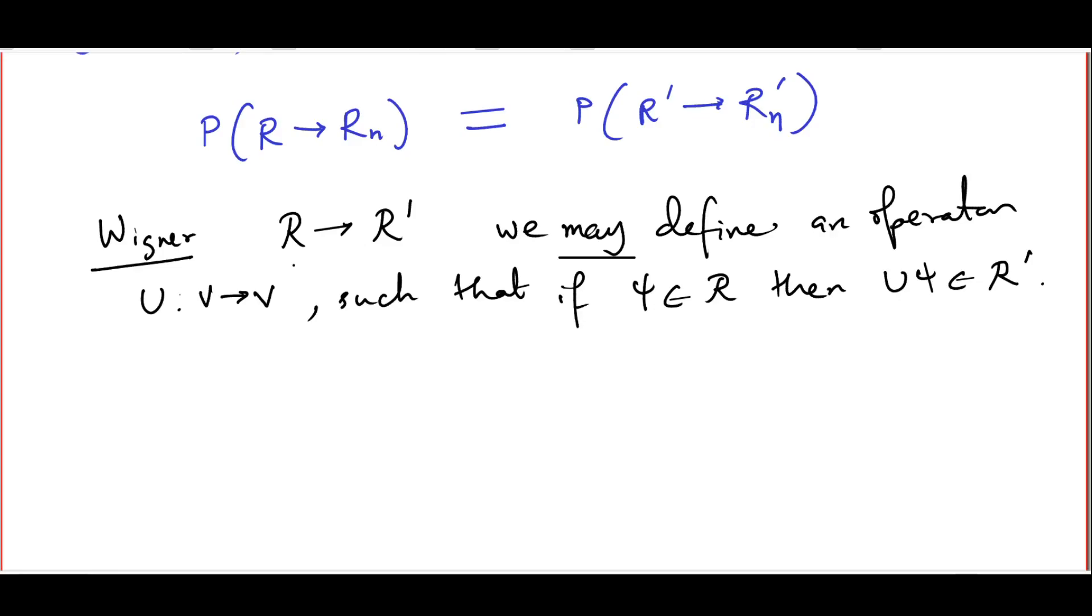And this operator U has two possibilities. It is either unitary and linear. So U acting on zeta phi plus eta psi is zeta, once again zeta and eta are complex numbers, U phi plus eta U psi, that's linearity for U, and unitary, which means that the inner product of U phi and U chi is the same as the inner product between phi and chi.